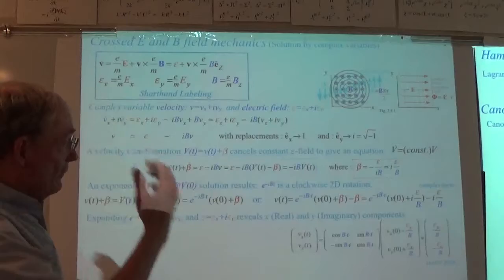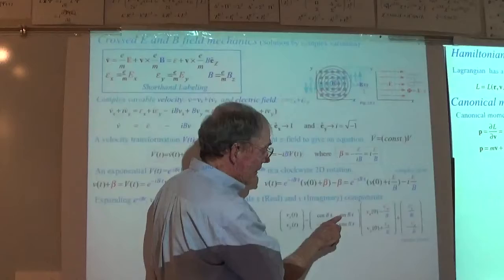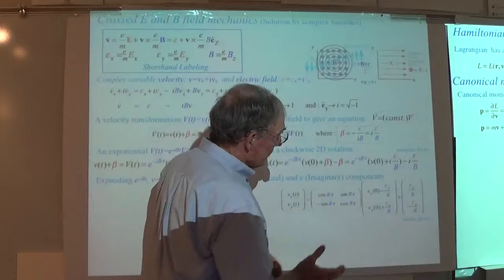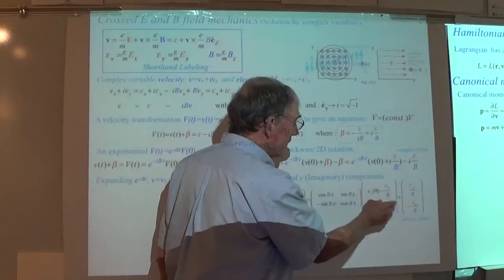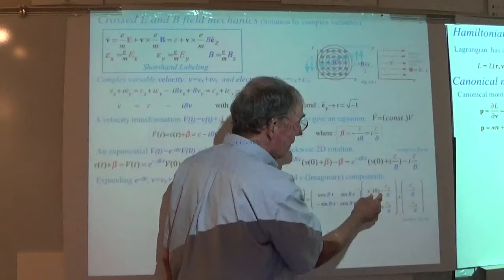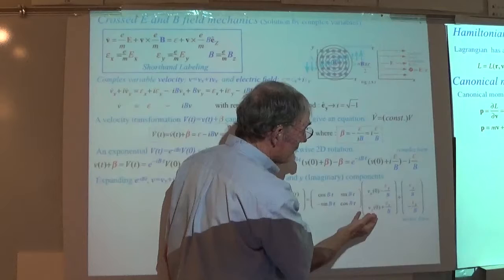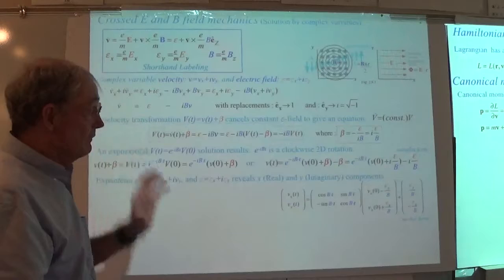We'd like to also get the coordinate form. Integrate the complex expression one more time — we get another -iB coming down from the integral. The integral of the rest gives an extra term times time, plus a constant. That's the final solution written out in terms of actual coordinate: x + i·y.